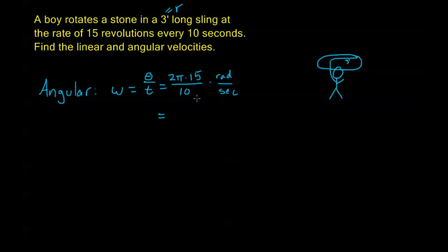Now, of course, we can simplify this down. 2 times 15 is 30. Right? So, we have 30π over 10 or, in other words, just 3π radians per second. That's my angular velocity. Or, in other words, he's doing 1 and a half revolutions every second. Right? That's what 3π radians would be.